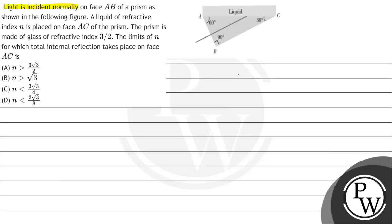light is incident normally on face AB of a prism as shown in the following figure. We are given a figure. A liquid of refractive index n is placed on face AC of the prism.